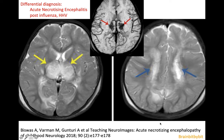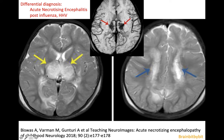In the differential diagnosis is acute necrotizing encephalitis, which occurs in slightly older children following a post-viral infection. It was first described in the 1990s in the Southeast Asian population. There is probably a genetic predisposition and a viral trigger, leading to edema and hemorrhage in the thalamus.